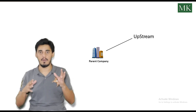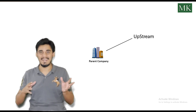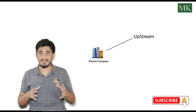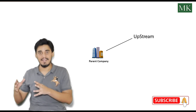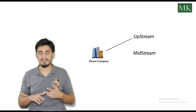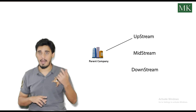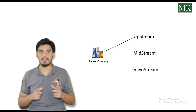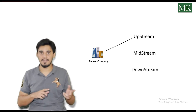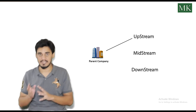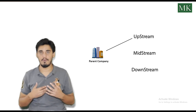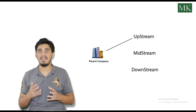Let's take an example of a company working on the upstream side of the oil and gas sector, that is the exploration of oil and gas. The whole industry of oil and gas is divided into three major sectors: upstream, midstream, and downstream. Upstream is responsible for exploration; midstream for transportation and logistics; and downstream for refining and selling to the final consumer.